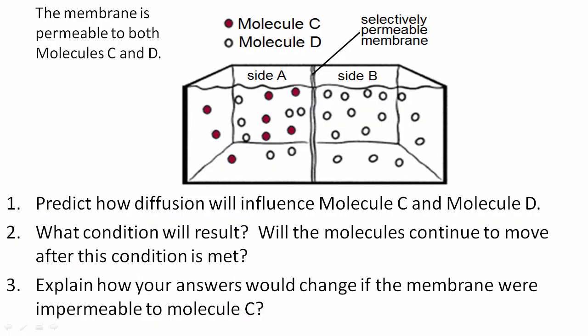Based on your understanding thus far, consider how diffusion interacts with a selectively permeable membrane. Identify the two environments listed side A and side B. Notice that they're separated by a membrane permeable to both molecules C and D. So pause the video and respond to the three questions below.